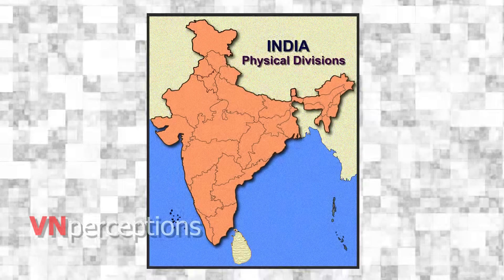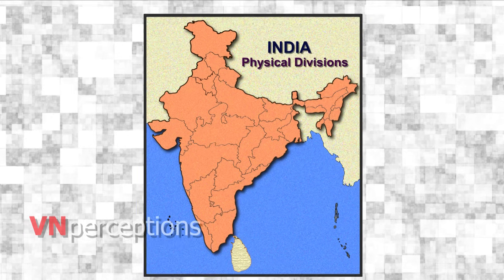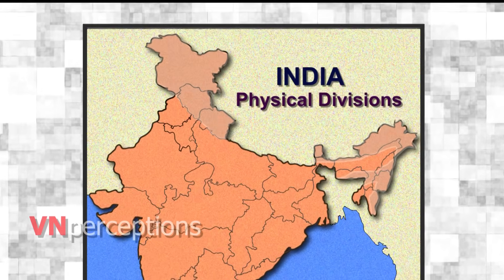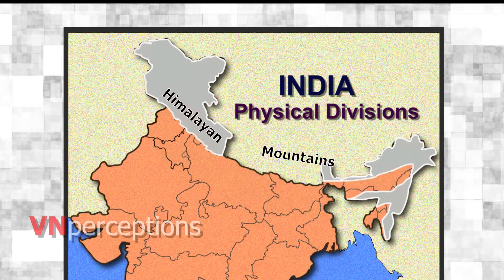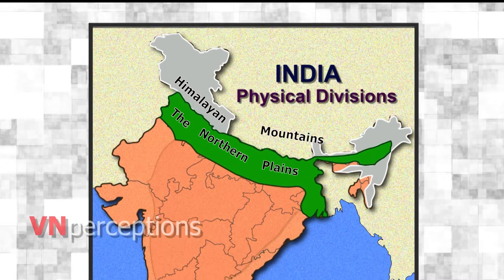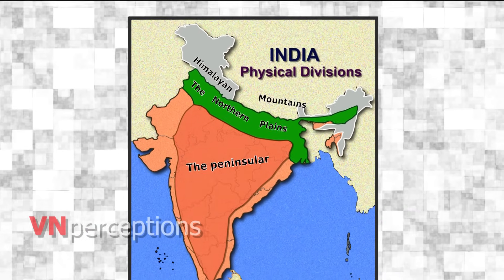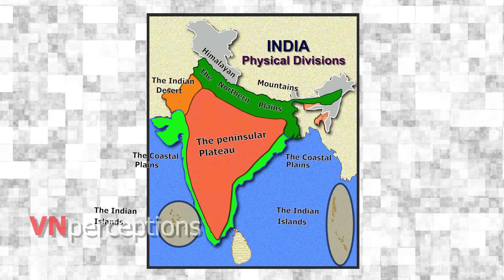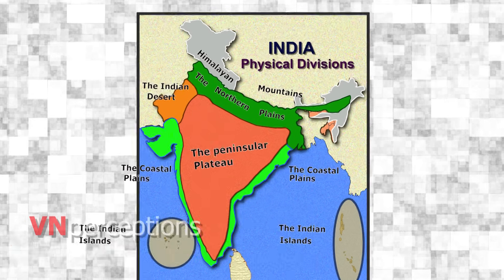The physical features of India can be grouped as the Himalayan mountains, the northern plains, the peninsular plateau, the Indian desert, the coastal plains and the Indian islands.